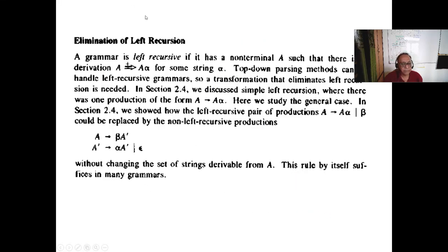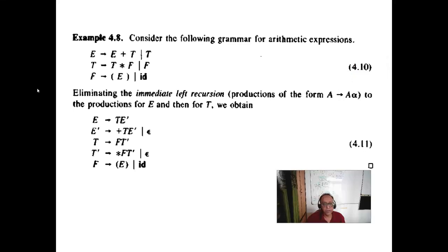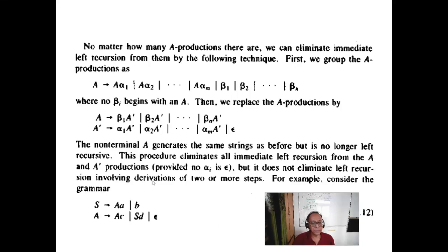Elimination of left recursion: the original rule A to A-alpha is replaced by A to beta A-dash and A-dash to alpha A-dash or epsilon — this is a new variable. By left factoring you remove the left recursion. But remember this variable can go to epsilon, so for top-down parsing we must check that FIRST and FOLLOW sets are disjoint. This is the original expression grammar from the Aho et al. textbook — very important. It is an unambiguous grammar and fits bottom-up parsing but not top-down parsing.